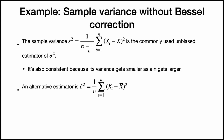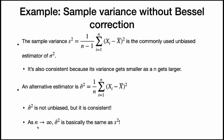What if we estimated sigma squared using 1 over n instead? This is not an unbiased estimator of sigma squared, but it is consistent. The difference between sigma-hat-squared and s-squared is only the difference between 1/n and 1/(n-1), and when n is really large, these two numbers are basically the same. Since s-squared approaches sigma squared, sigma-hat-squared will also approach sigma squared. So this estimator is consistent even though it's biased.